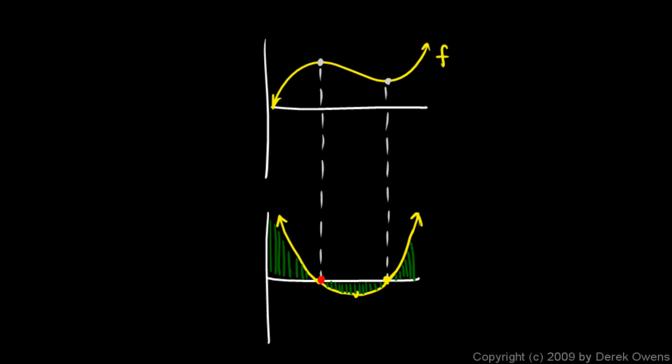So just as I can take this graph and use the slope to produce this graph down here, f prime, I can take f prime down here and use the area under it to produce this original function f. So the slope of a graph at any point gives me another function which is the derivative of that, and the area accumulated under a graph at any point gives me another function which is the anti-derivative of that.